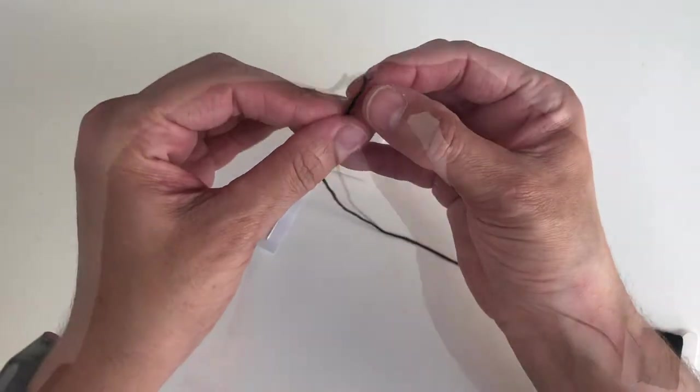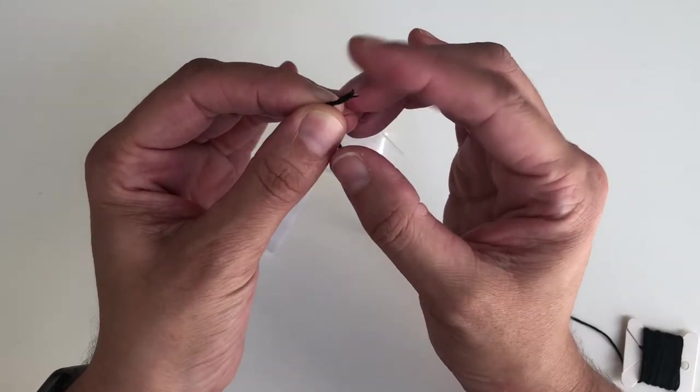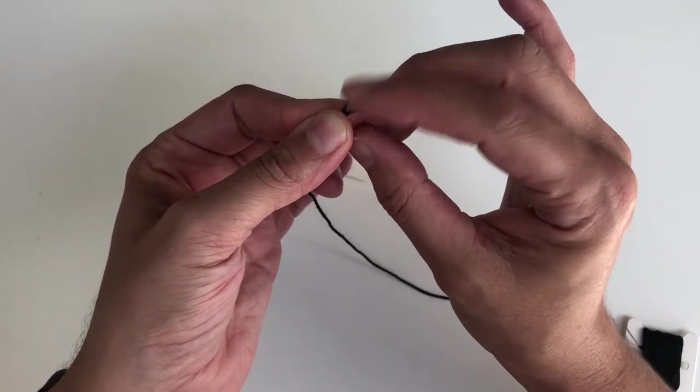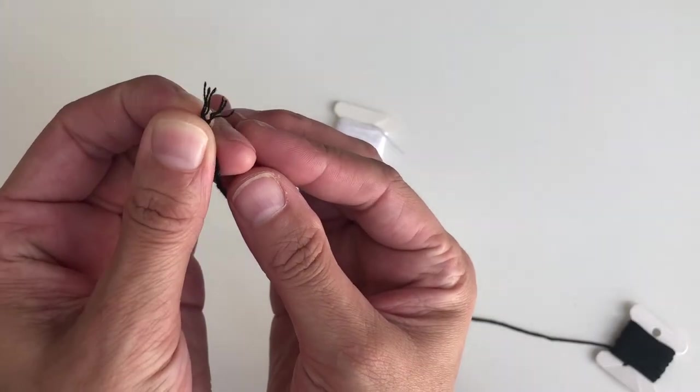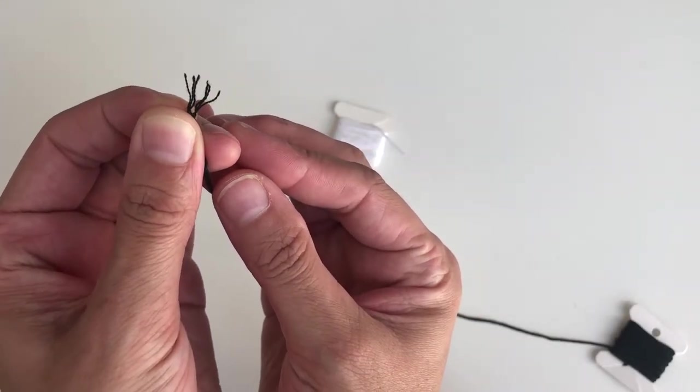Cotton embroidery thread is made up of six strands of thread that have been braided together. The beauty of this is that you are able to separate those strands of thread and then use a thinner or thicker line to create the details you want in embroidery.